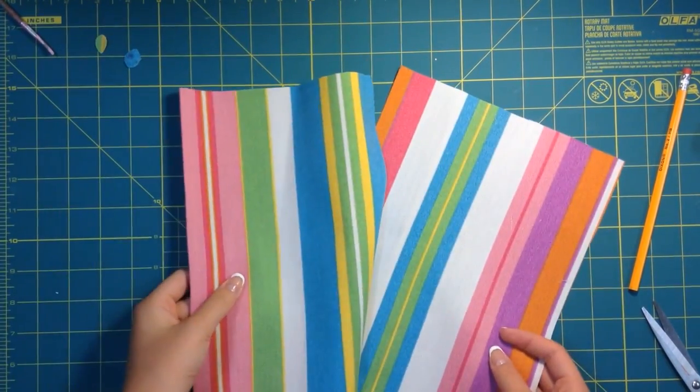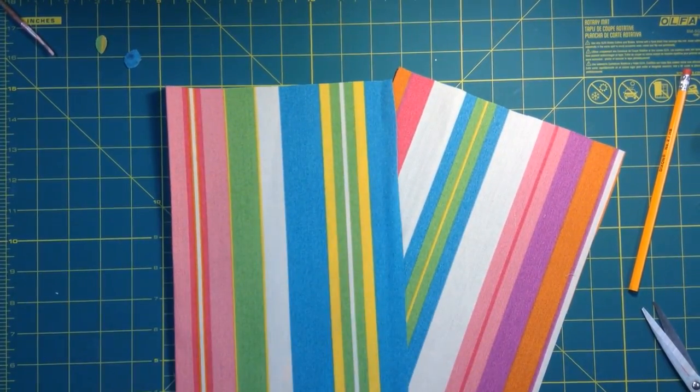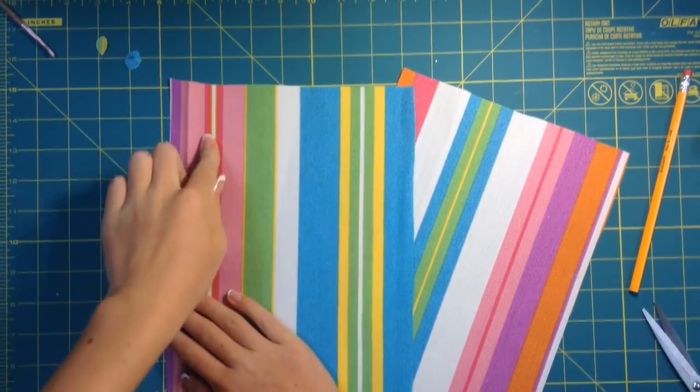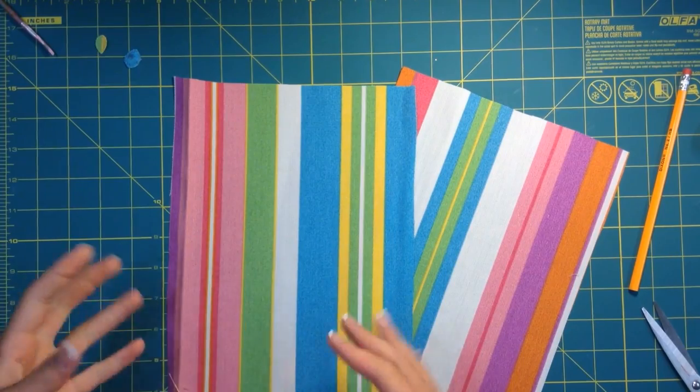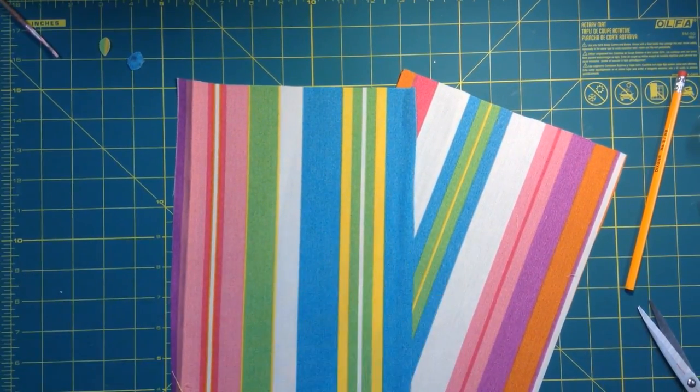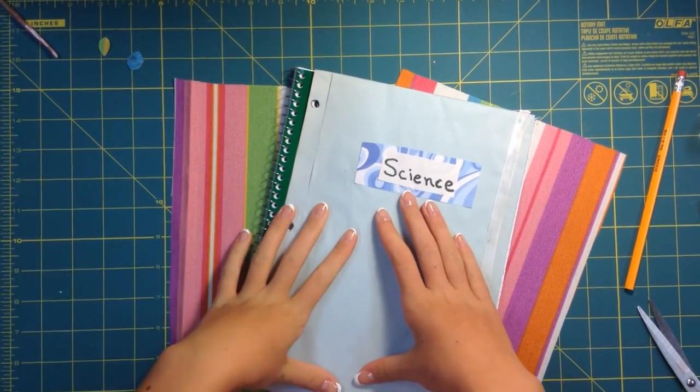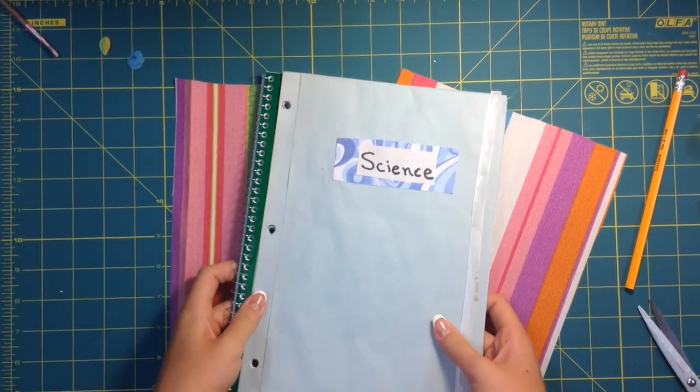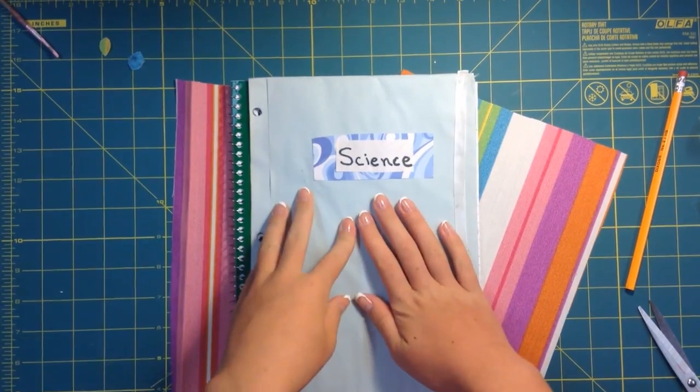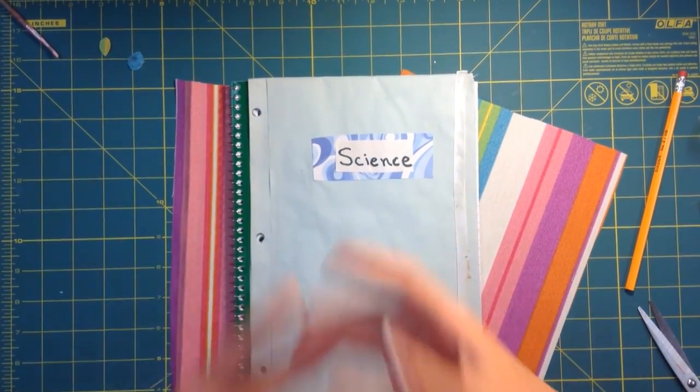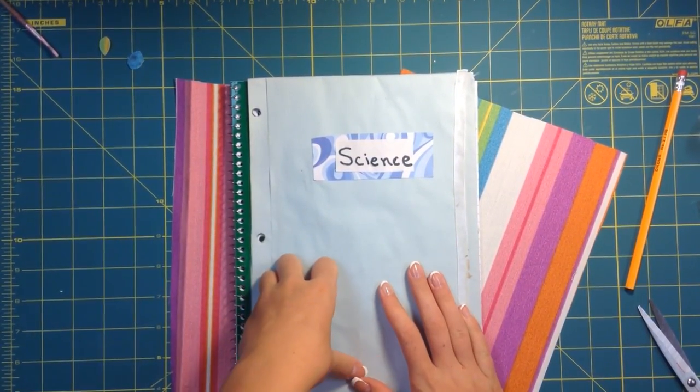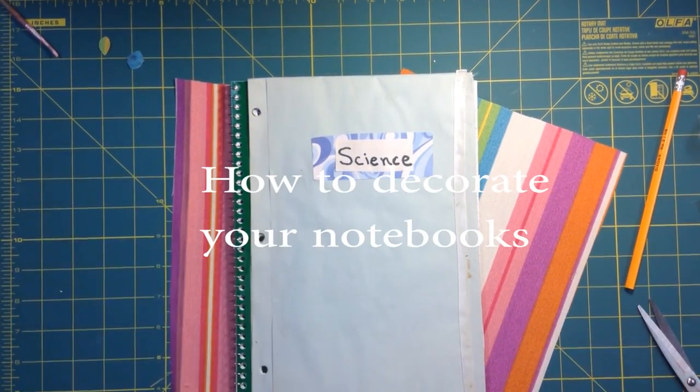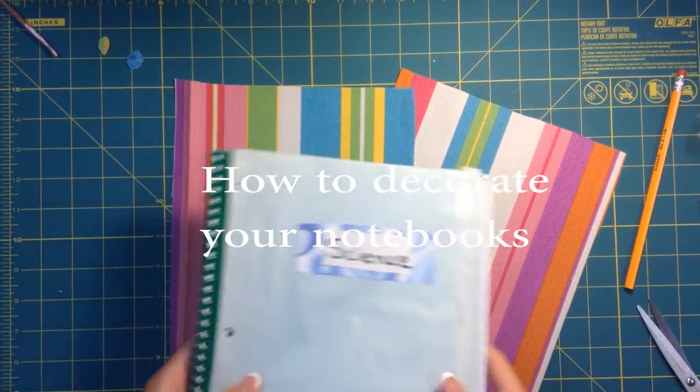Now what we're going to do is make the little binder holes so that we can stick our pencil pouch into our binder. To do that I'm just going to be using a notebook. You can also use a binder but I think the notebook is just a little bit easier. And if you want to know how I decorated this notebook and just made it personalized and really cute, check out my last video. I will leave the link in the description box below as well as right here. But you can just go check that out.